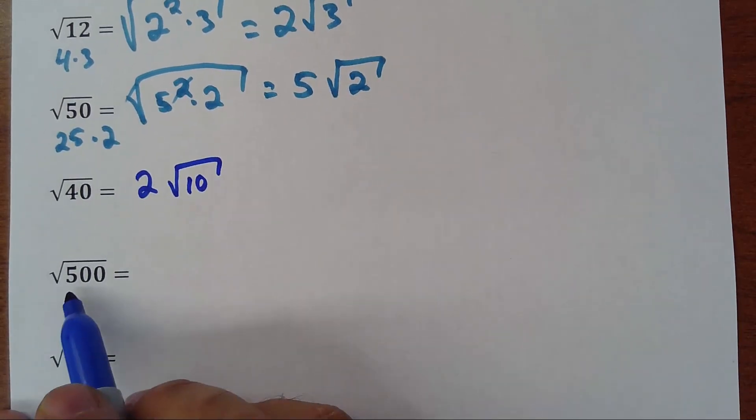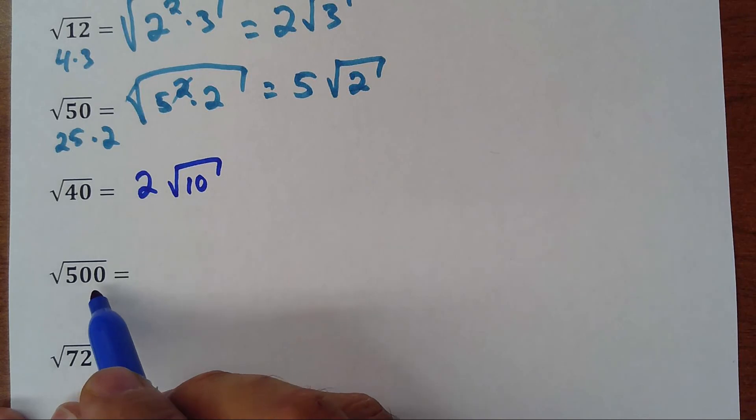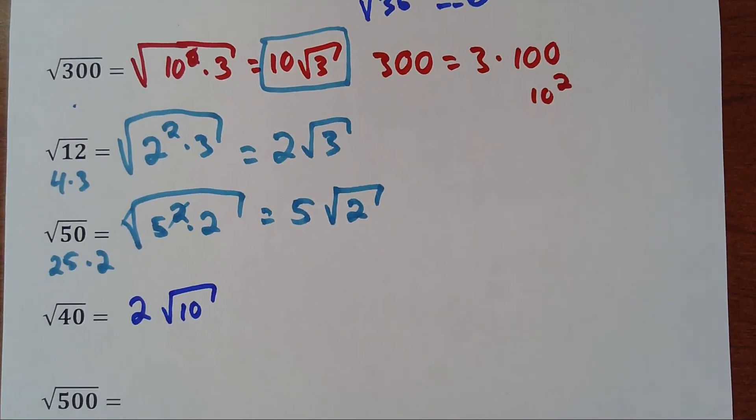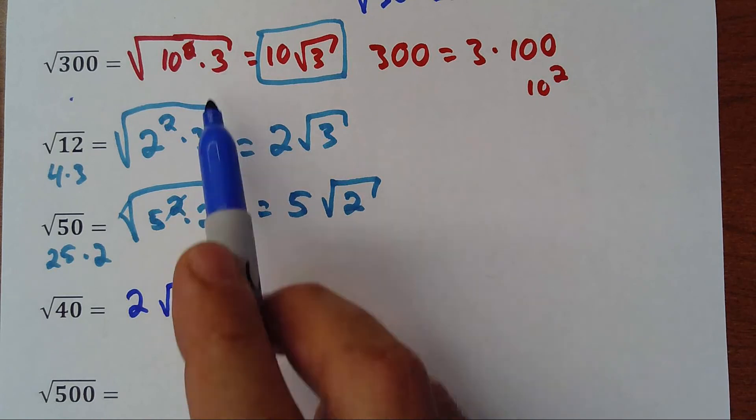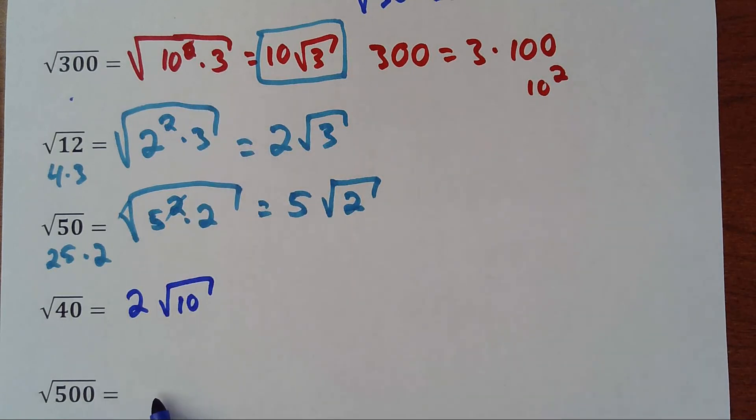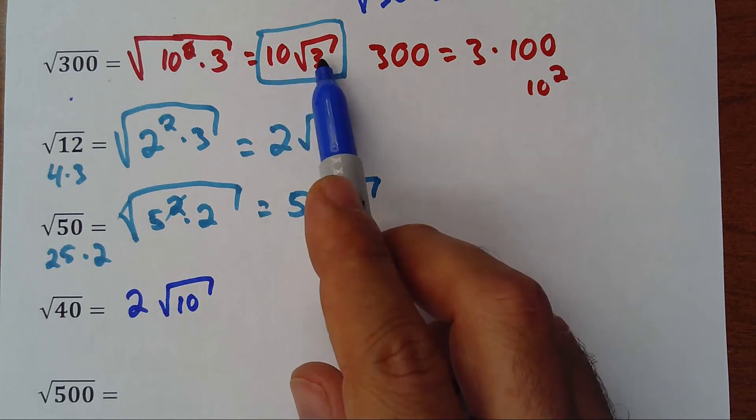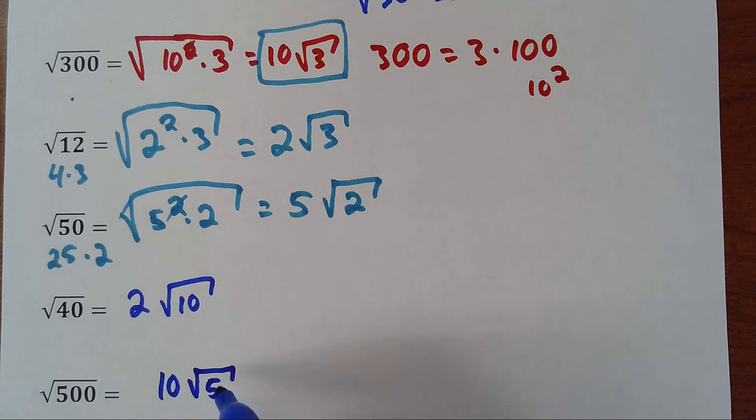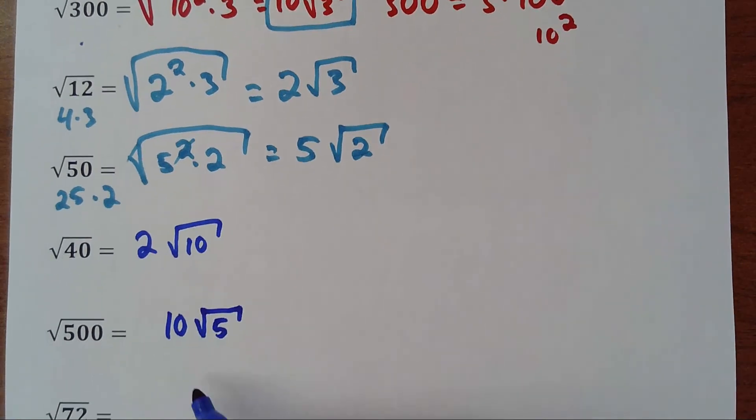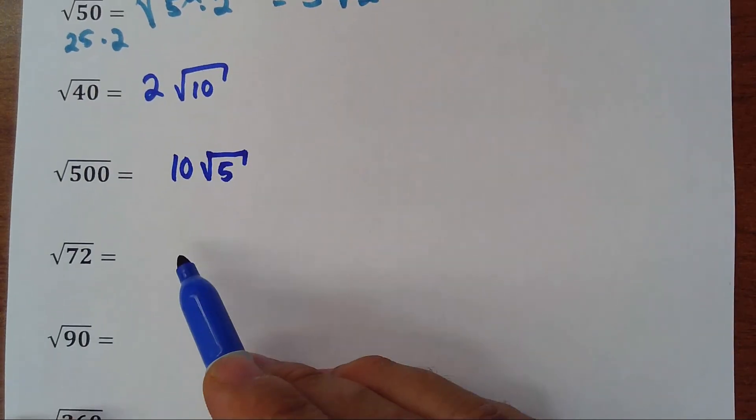500 is very similar to 300. You see, 300 was 10 squared times 3. This one will be 10 squared times 5. So the answer, instead of 10 square root of 3, will be 10 square root of 5. Very simple. Once you get the practice, you'll do it very quickly.